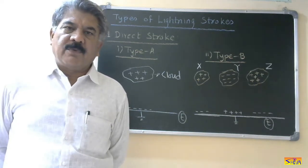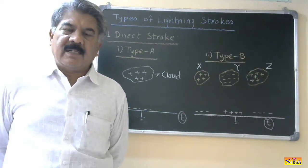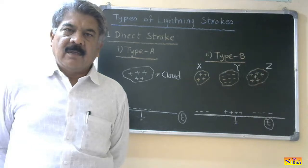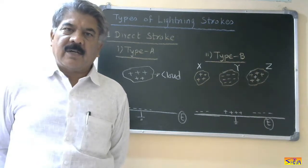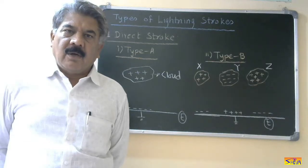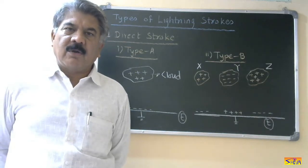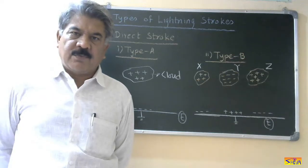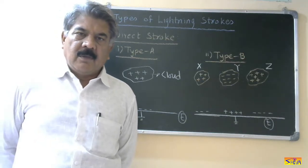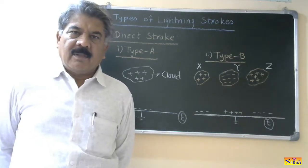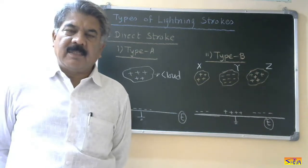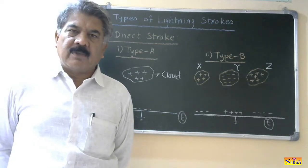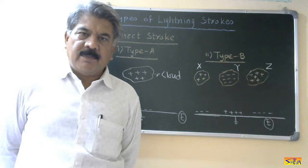From a power system point of view, the lightning discharges are on the power system equipment, transmission line, transmission line tower, or the transmission line conductors, because they are exposed to the atmosphere. So whenever I say discharges on the earth or near to the earth, it means it is near to the power system component or equipment.